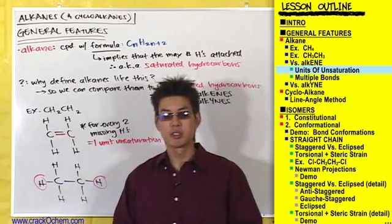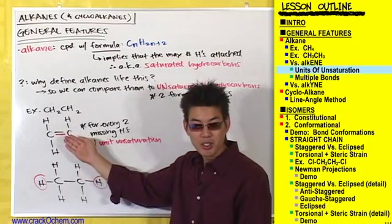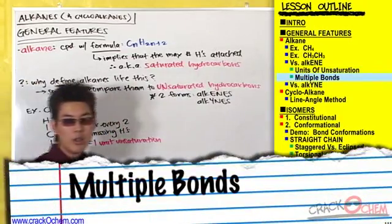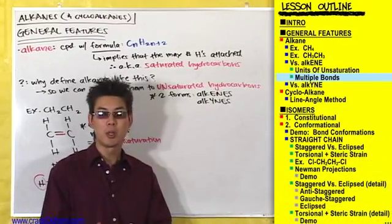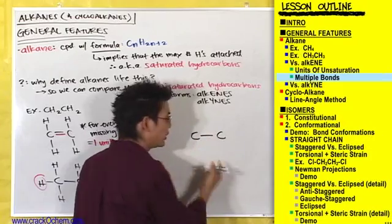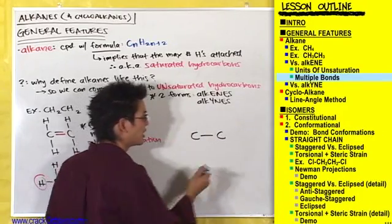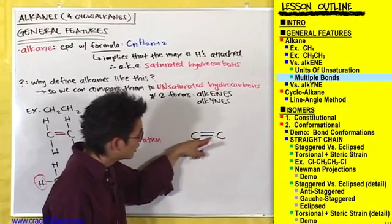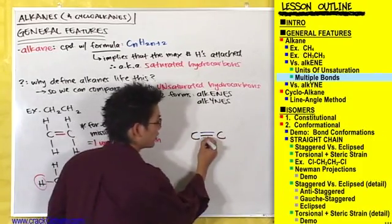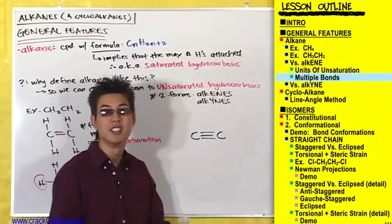If your teacher asks you to find units of unsaturation and you don't want to count hydrogens, just check how many multiple bonds you have — each multiple bond equals one unit of unsaturation. A multiple bond is any bond in addition to the initial single bond between two atoms. A double bond has one single bond and one multiple bond — that's one unit of unsaturation. A triple bond has one single bond and two multiple bonds — that's two units of unsaturation.